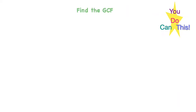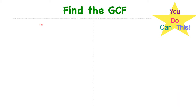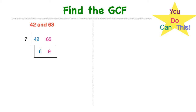Let's practice a couple more. Let's find the greatest common factor of 42 and 63. We start off by drawing our L for ladder and place our numbers inside — 42 and 63. Then I think of any shared factor of 42 and 63, so I'm thinking of 7. I draw my L again and think: 7 times 6 is 42, and 7 times 9 is 63. Then I look at 6 and 9, and they share a common factor of 3.